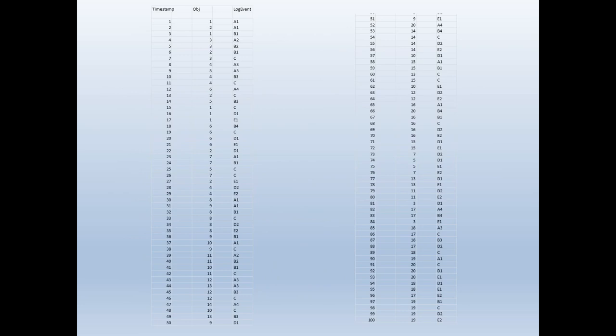For example, for object 1 we have the sequence of events A1 and B1, then C, then D1 and then E1. All these sequences can then be fed as input to a hidden Markov model algorithm, with the result a process model.